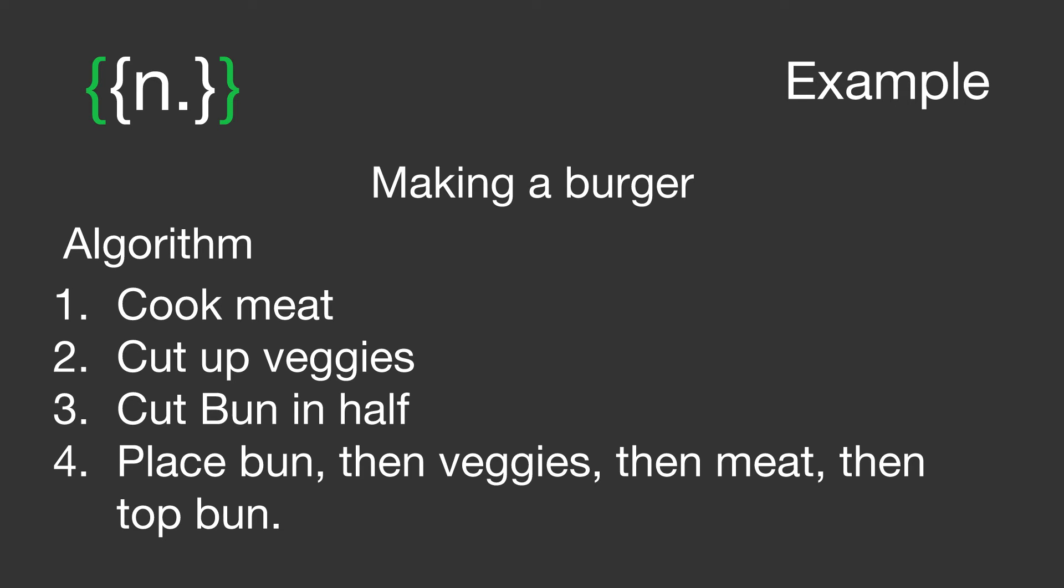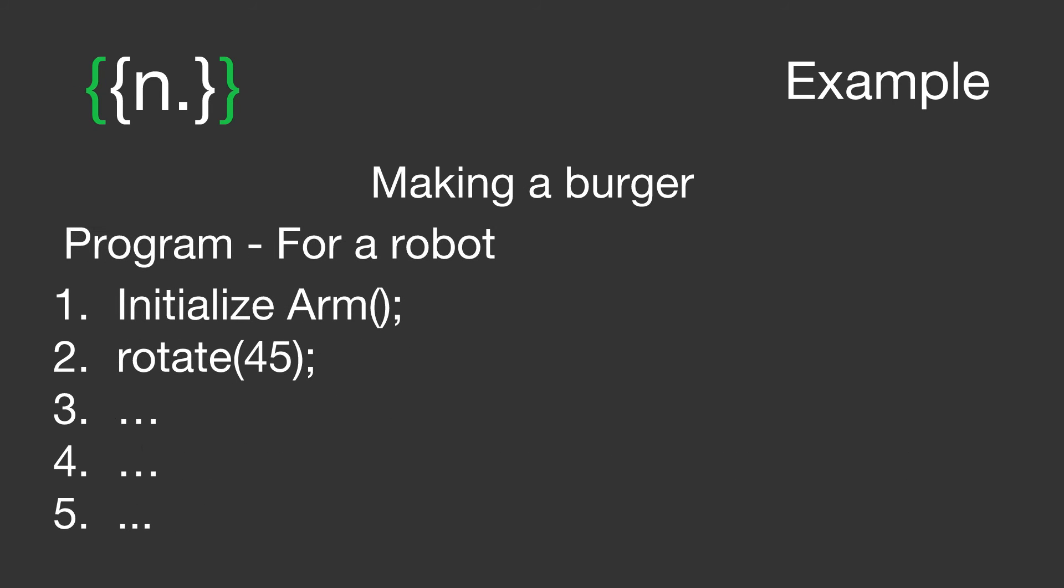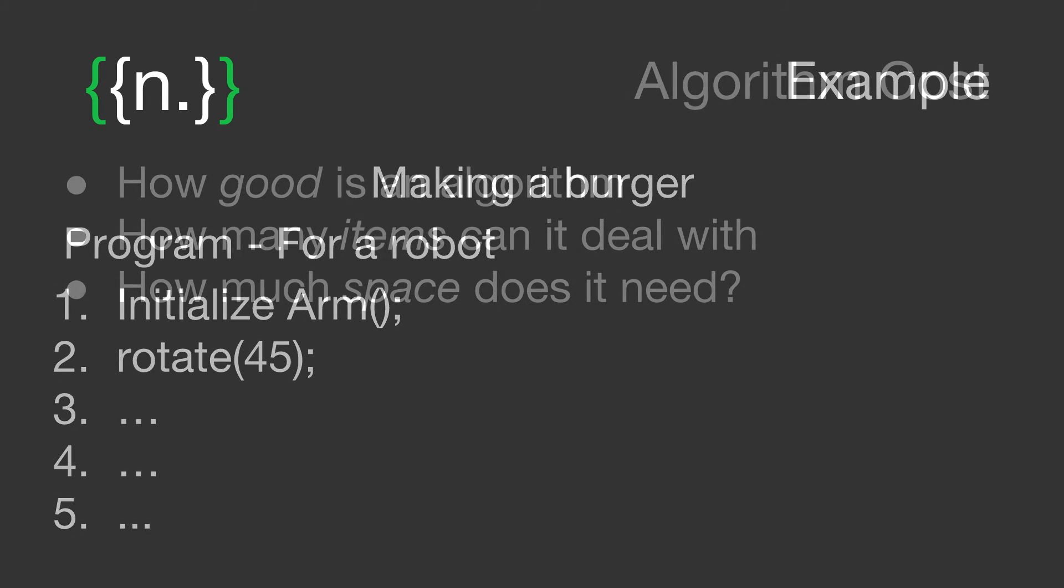Now, let's look at a program for a robot to do the same thing. Instantly, you can see it looks different. For example, you might have some code that initializes the arms of the robot. These arms then may rotate and may then need to reach out and grab the food, cut, dice.